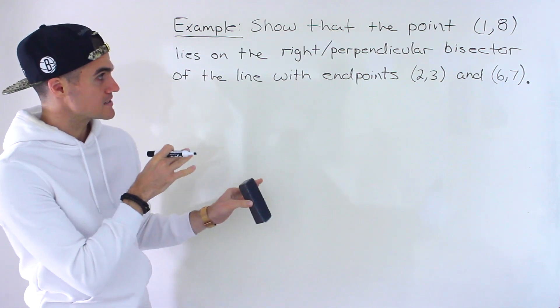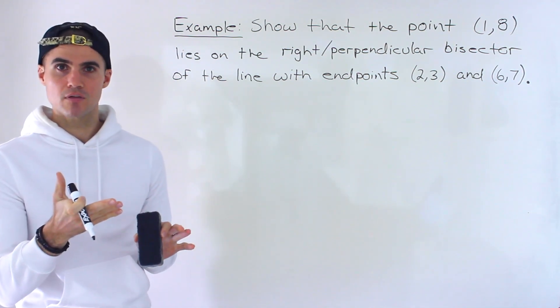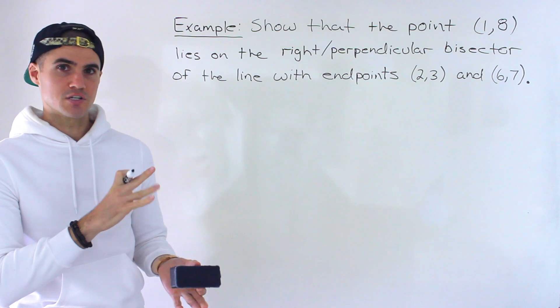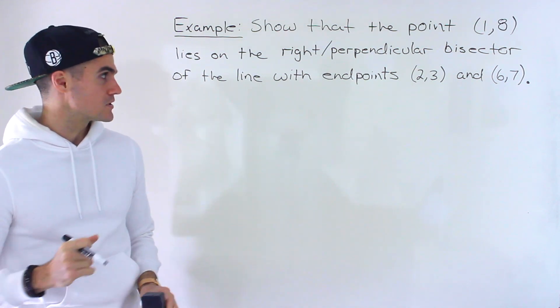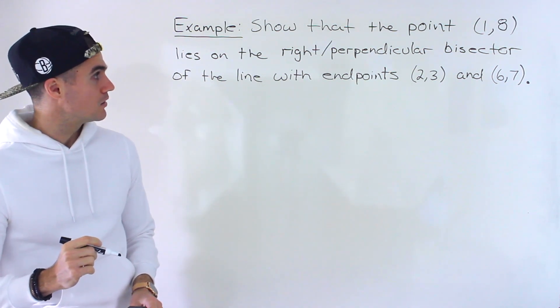A right bisector and perpendicular bisector both mean the same thing. Your teacher or textbook is probably going to use one of those terminologies.